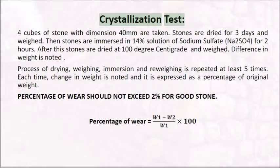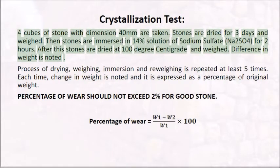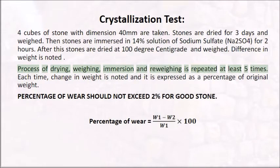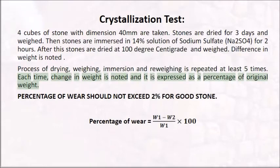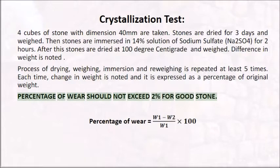Crystallization Test: 4 cubes of stone with dimension 40 mm are taken. Stones are dried for 3 days and weighed. Then stones are immersed in 14% solution of sodium sulfate (Na2SO4) for 2 hours. After this, stones are dried at 100 degrees centigrade and weighed. The difference in weight is noted. The process of drying, weighing, immersion, and re-weighing is repeated at least 5 times. Each time, change in weight is expressed as a percentage of original weight. Percentage of wear should not exceed 2% for a good stone.